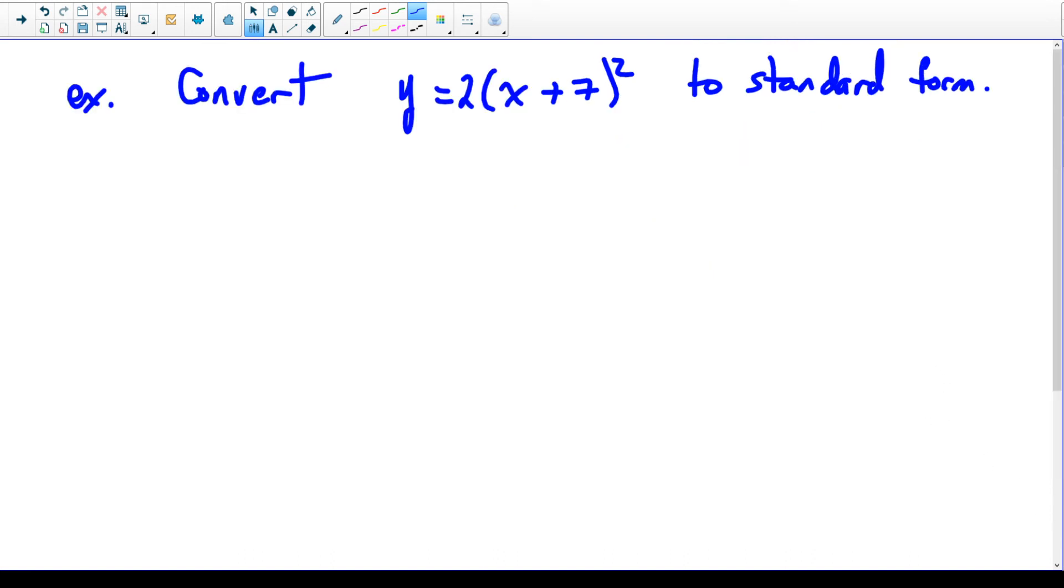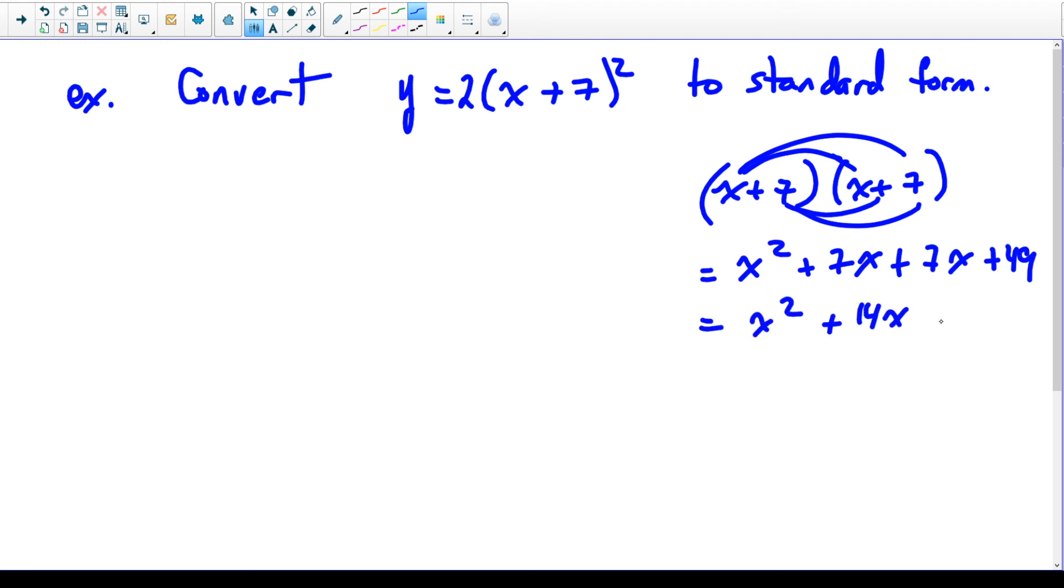So I'm going to show one more example. Now this example is still a vertex form quadratic, but as we've seen with transformations, sometimes some of the transformations could be missing. So if the plus k is missing, this is still a vertex form. So we're going to take the x plus 7 squared off to the side. I know now that it's just x plus 7 times x plus 7, so I'm going to do my double distributivity. x times x is x squared, x times 7 is plus 7x, 7 times x is plus 7x, 7 times 7 is plus 49. So that becomes x squared plus 14x plus 49.